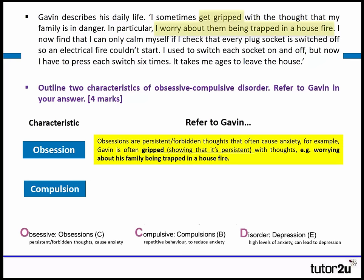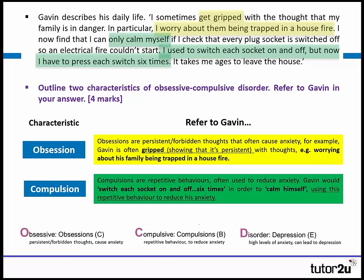Doing exactly the same thing for compulsions and quoting much more from the extract: compulsions are repetitive behaviour often used to reduce anxiety. Gavin would switch every socket on and off six times in order to calm himself — adding that tiny bit more, showing he uses this repetitive behaviour to reduce his anxiety.